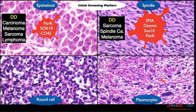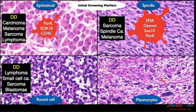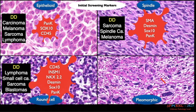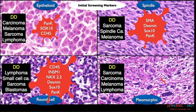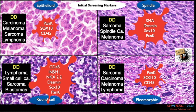For spindle lesions: desmin for skeletal muscle, SOX10 for melanoma and neural origin, and pancytokeratin for sarcomatoid carcinomas. For round cell tumors, the differential diagnosis includes lymphoma, small cell carcinoma, sarcoma, or blastomas — markers include CD45, INSM1 for neuroendocrine tumors, NKX2.2 for Ewing sarcoma, desmin for rhabdomyosarcoma, SOX10 for neural and melanocytic tumors, and pancytokeratin for epithelioid sarcoma. For pleomorphic tumors: sarcoma, carcinoma, melanoma, and lymphoma — markers include pancytokeratin, SOX10, and CD45.